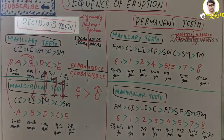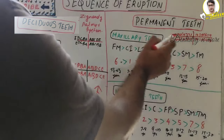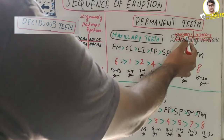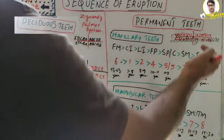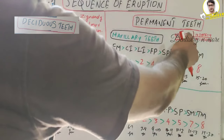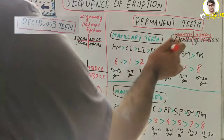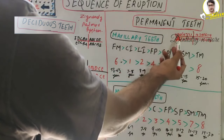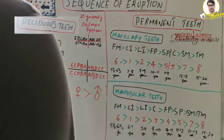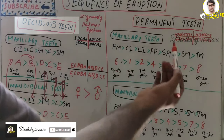For permanent teeth, we use the Zsigmondy-Palmer system with numbers 1 through 8, representing: central incisor, lateral incisor, canine, first premolar, second premolar, first molar, second molar, and third molar — denoted as one through eight in each quadrant.